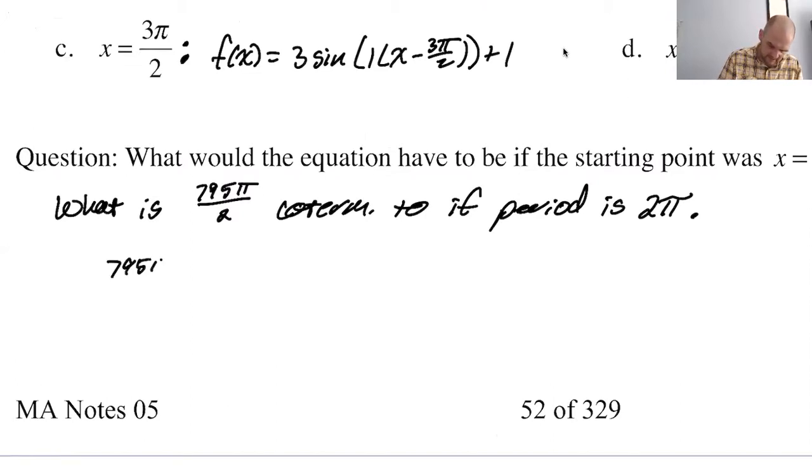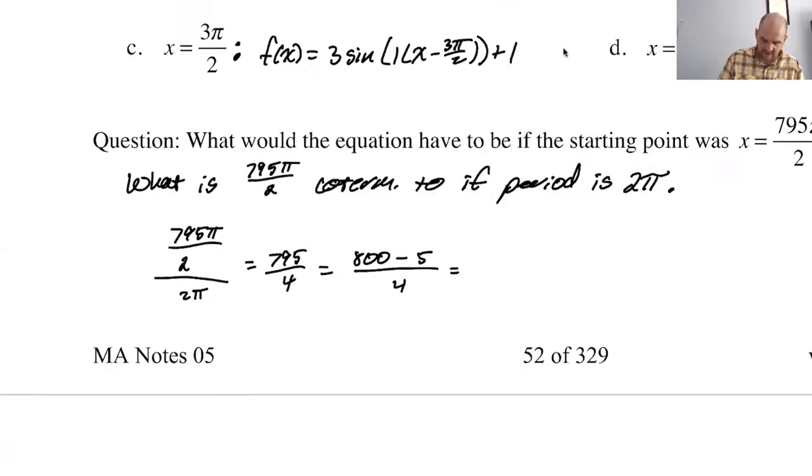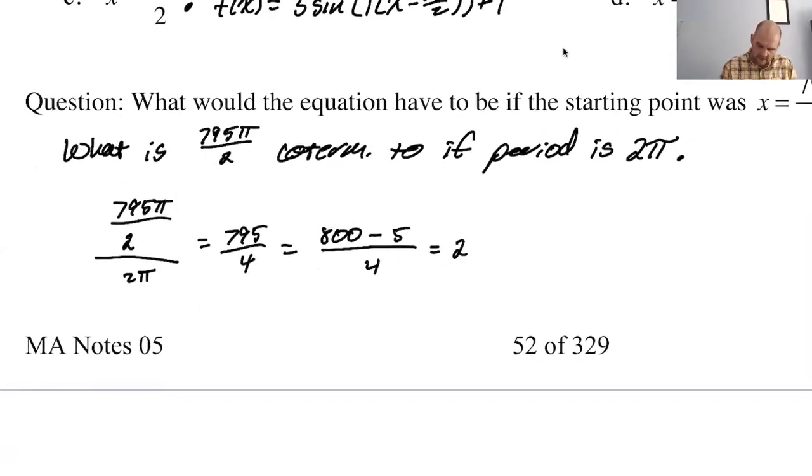Over two and then divide by two pi. Because I got to figure out like N. So this is 795 over four. So 800 is, so this is like 800 minus five over four. Okay. I don't really know what I'm doing here. Why did I think that made sense? 800. So that's 200. Oh, I have an idea of why it's 200 minus 1.25.